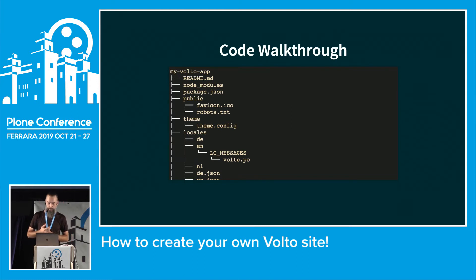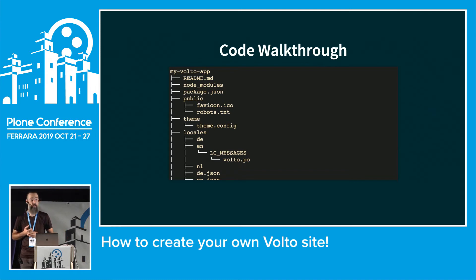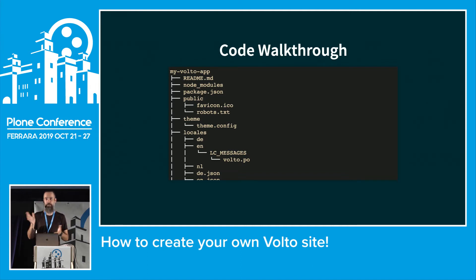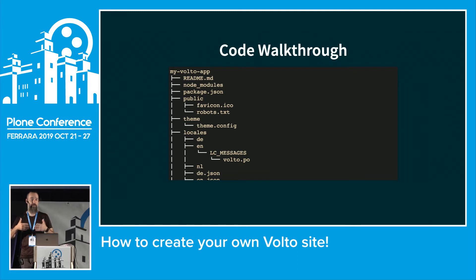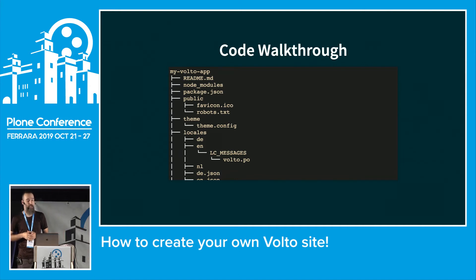There are some files regarding client and index — those are files used to run the application. You don't need to change them. We use client.js and index.js because we have server-side rendering. The first hit on Volto is rendered on the server so it's fast — content is already there, and then it fetches all the JavaScript for subsequent client-side requests.